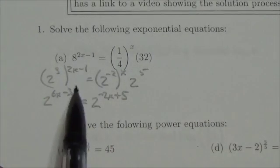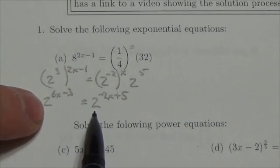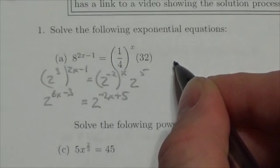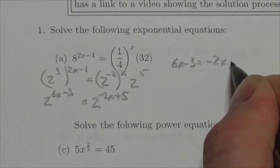Okay, good. Now that I've got a power equal to a power, and the bases are the same, I can, by default, state that their exponents are the same. So 6x minus 3 is going to equal negative 2x plus 5.